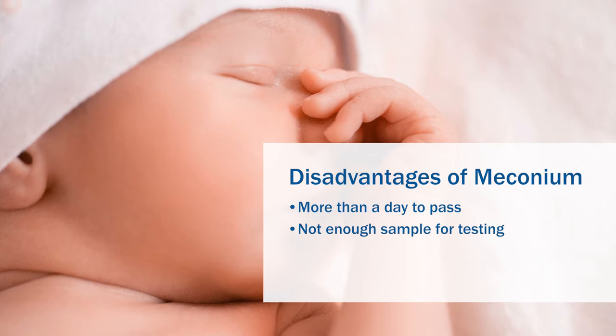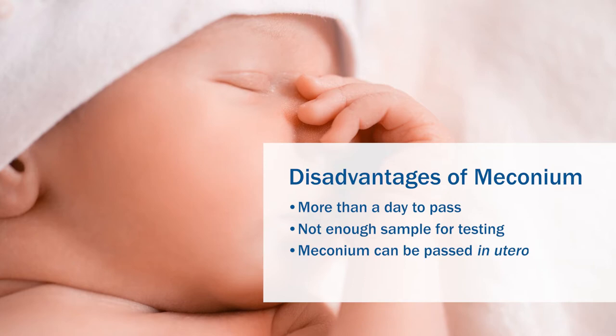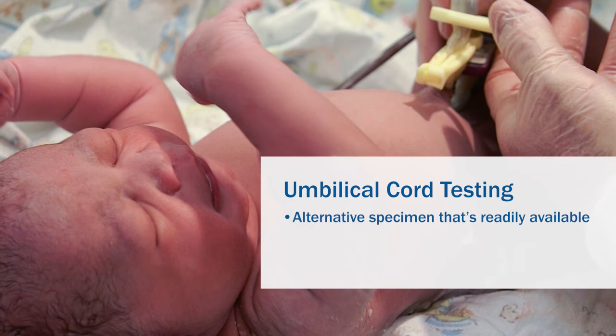In some cases, the meconium is passed in utero, making collection impossible, and there can be interference with commonly used screening techniques leading to false positives and negatives. For these reasons, drug testing an umbilical cord offers an alternative specimen that is readily available, easy to collect, and allows for faster testing results.